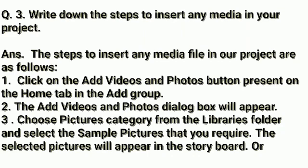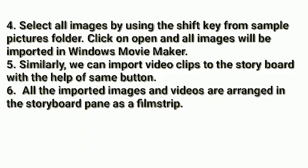The third question is: write down the steps to insert any media file in your project. Answer: the steps are as follows. First, click on the Add Videos and Photos button present on the Home tab in the Add group. Second, the Add Videos and Photos dialog box will appear. Third, choose the Pictures category from the Libraries folder and select the sample pictures that you require; the selected pictures will appear in the storyboard. Fourth, select all images by using the Shift key from the Sample Pictures folder. Fifth, click on Open and all images will be imported in Windows Movie Maker. Sixth, similarly we can import video clips to the storyboard with the same button. All imported images and videos are arranged in the storyboard pane as a film strip.